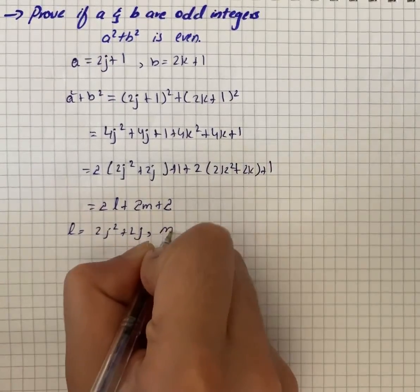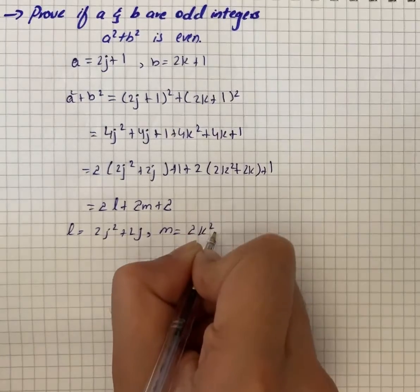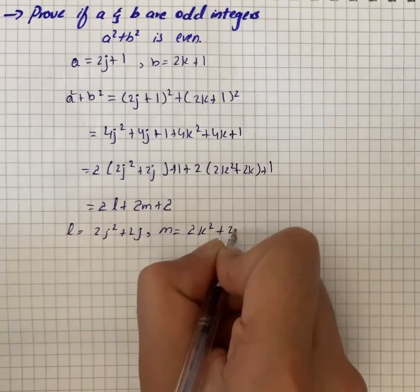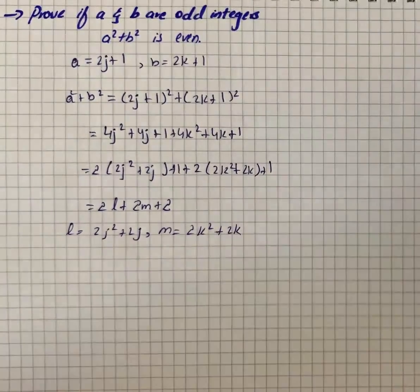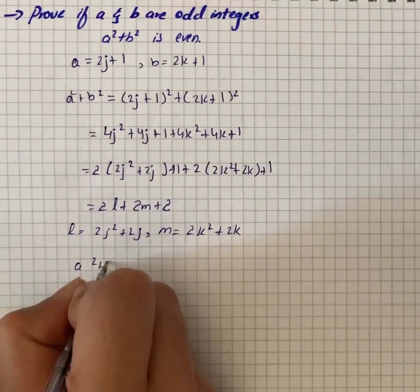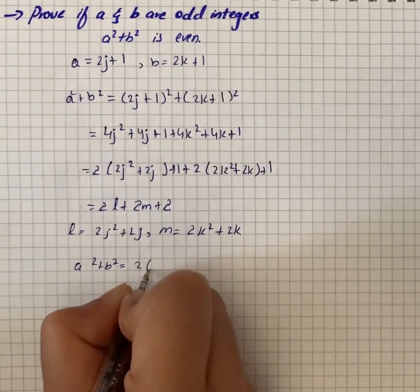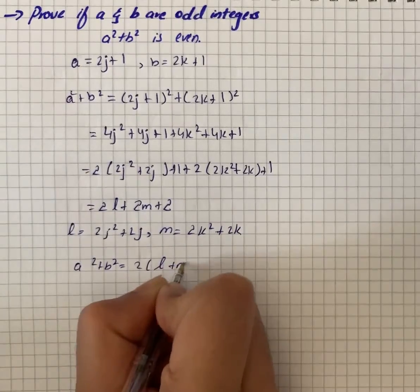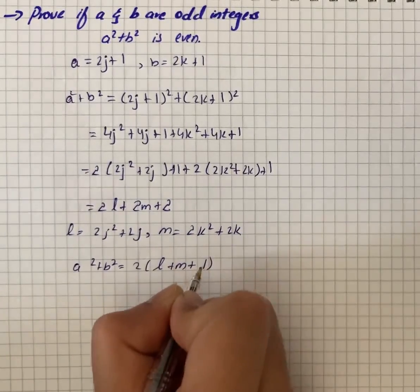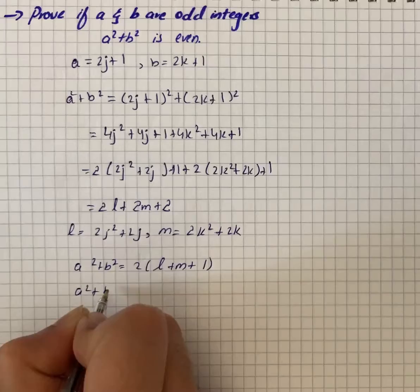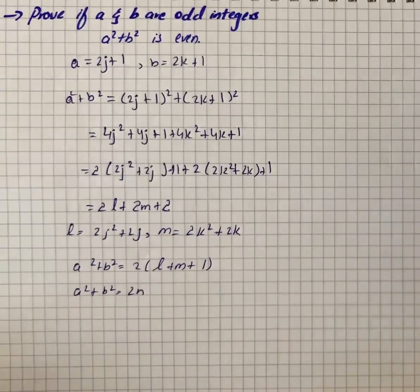And these are integers. Then a² + b² is equal to 2(l + m + 1). So a² + b² is equal to 2n, which is an integer by definition.